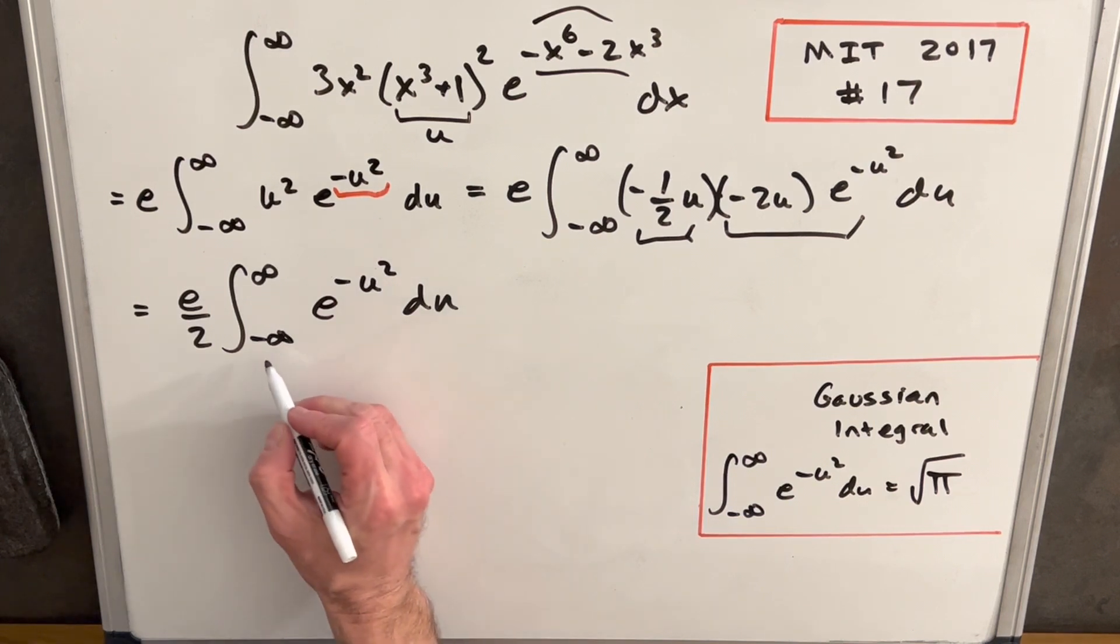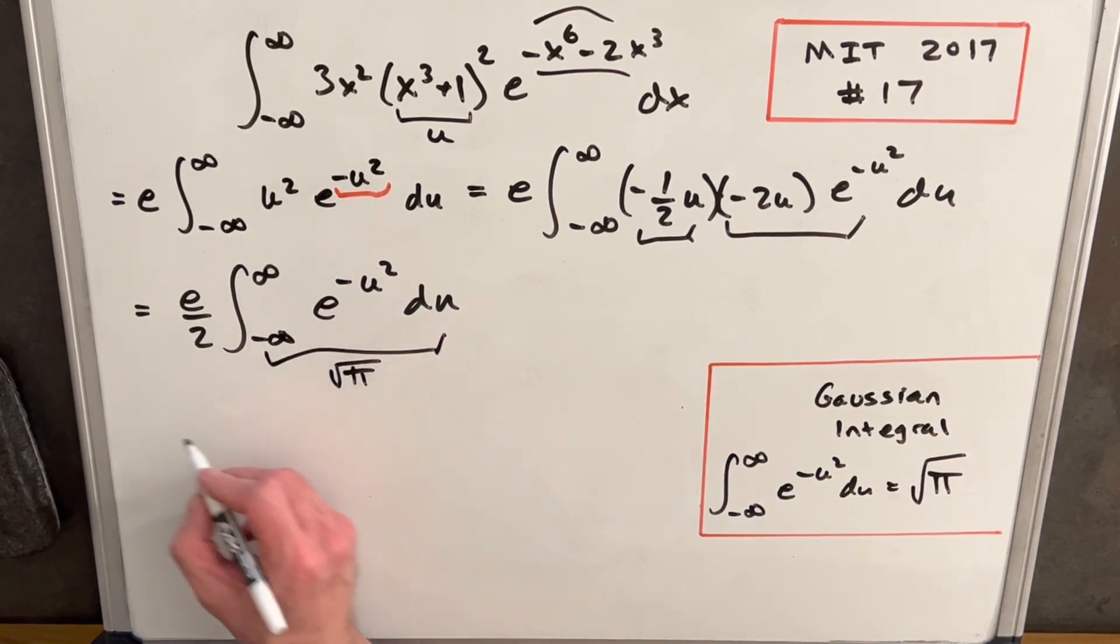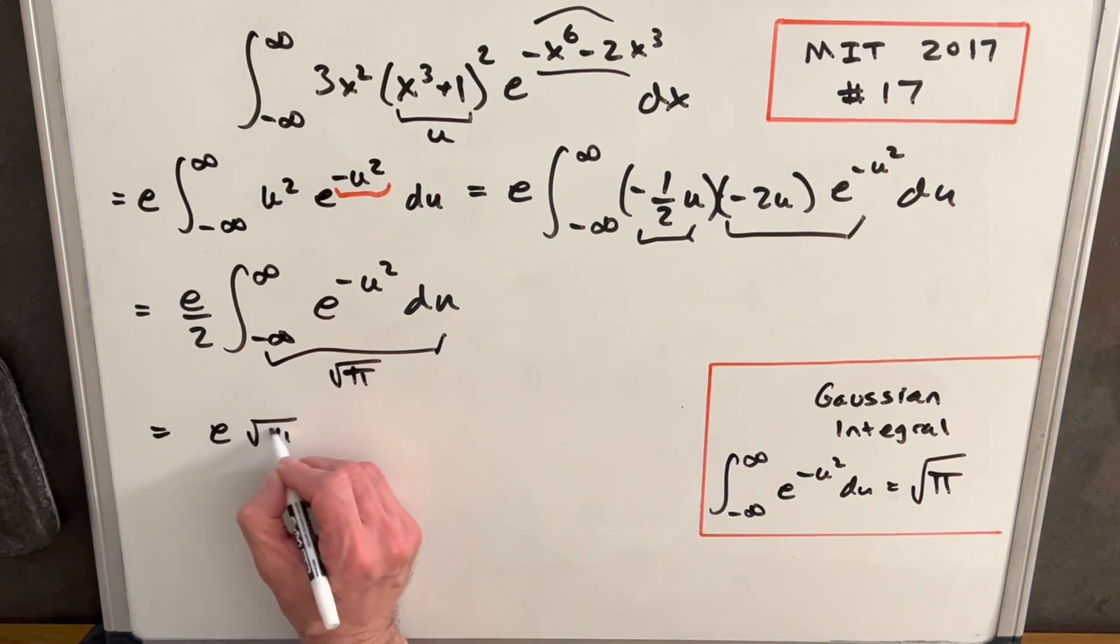So really all we need to do is just look at this last piece. So then just evaluating this again, we found that this was the square root of pi. So now just putting it all together, we're going to have e square root of pi over 2, and we're done.